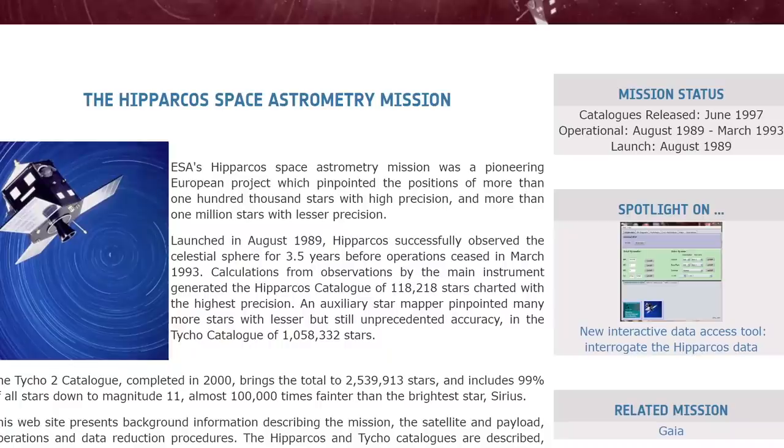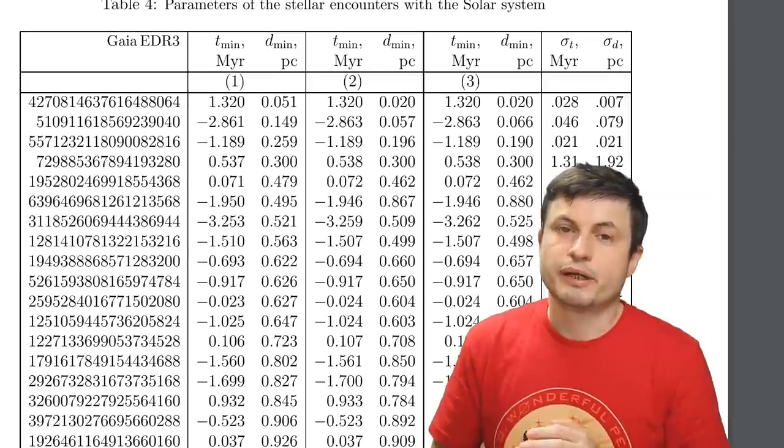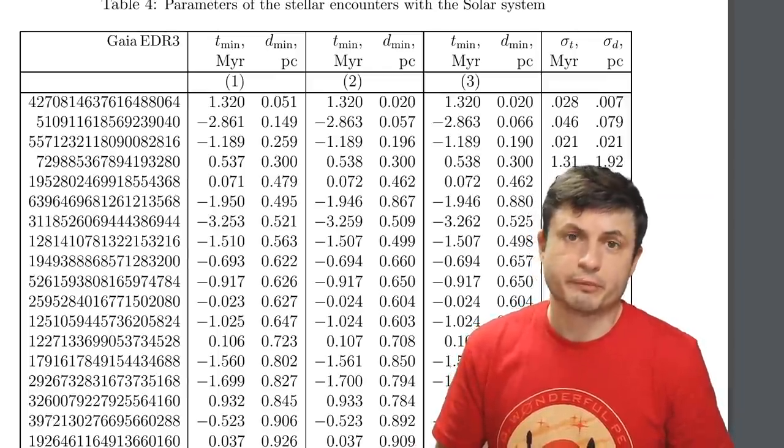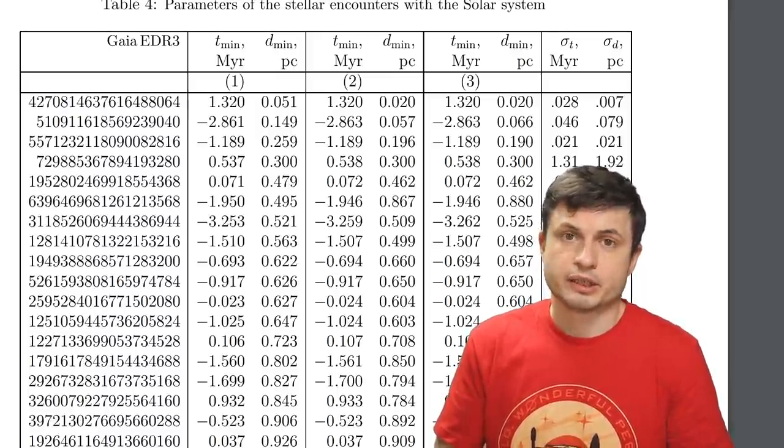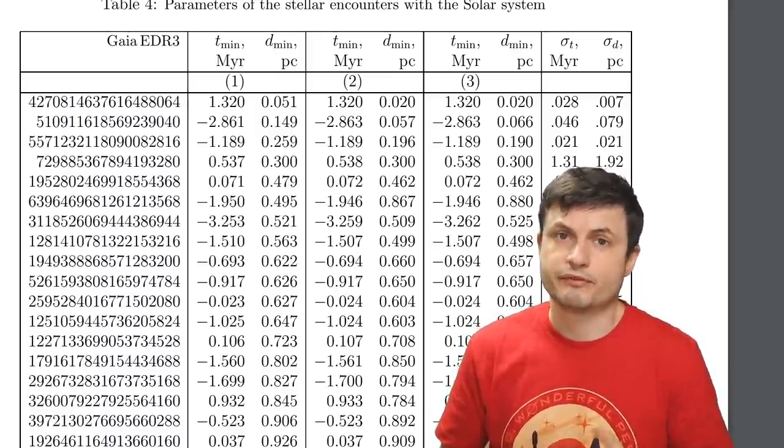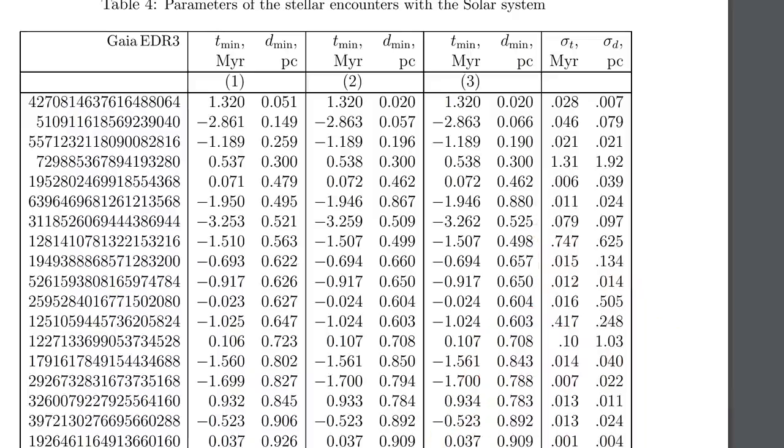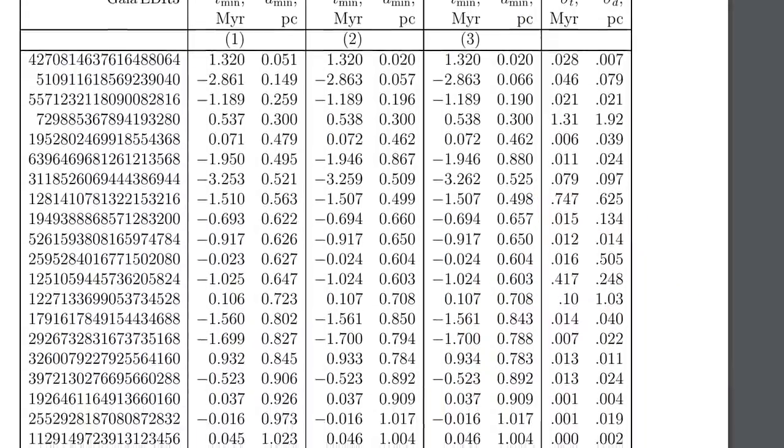Although the original mission was the Hipparchus mission, which was also by European Space Agency, and this only lasted for about four years, back in 1989 until 1993. And so by analyzing all of the stars in the database, and also by estimating their trajectory, going back and forward by about five million years, in this paper, the scientists identified several interesting objects.